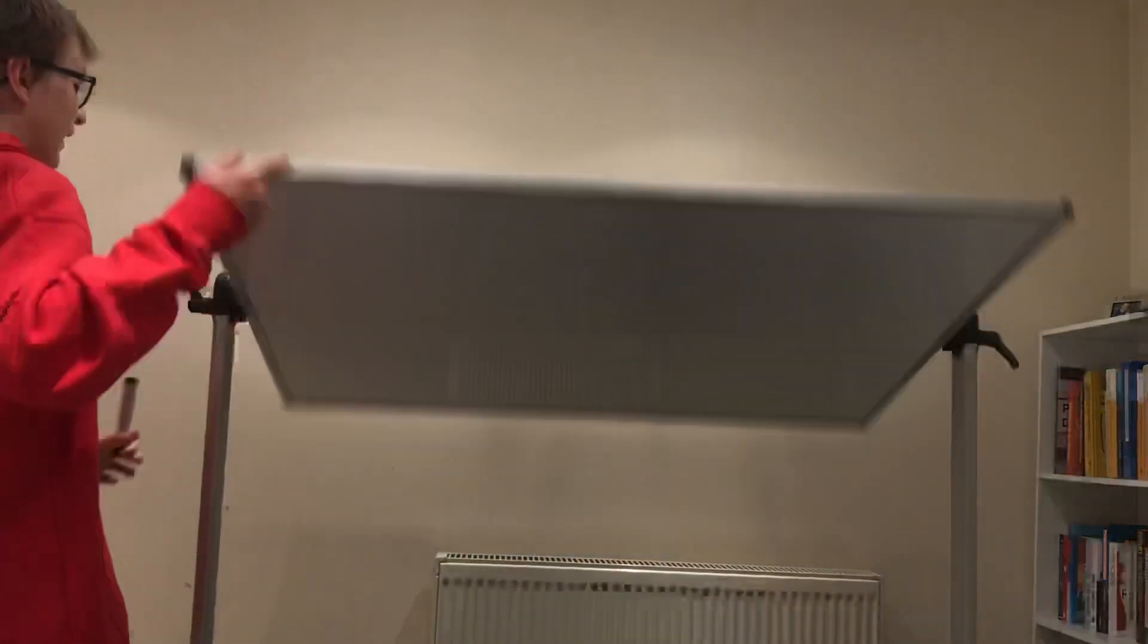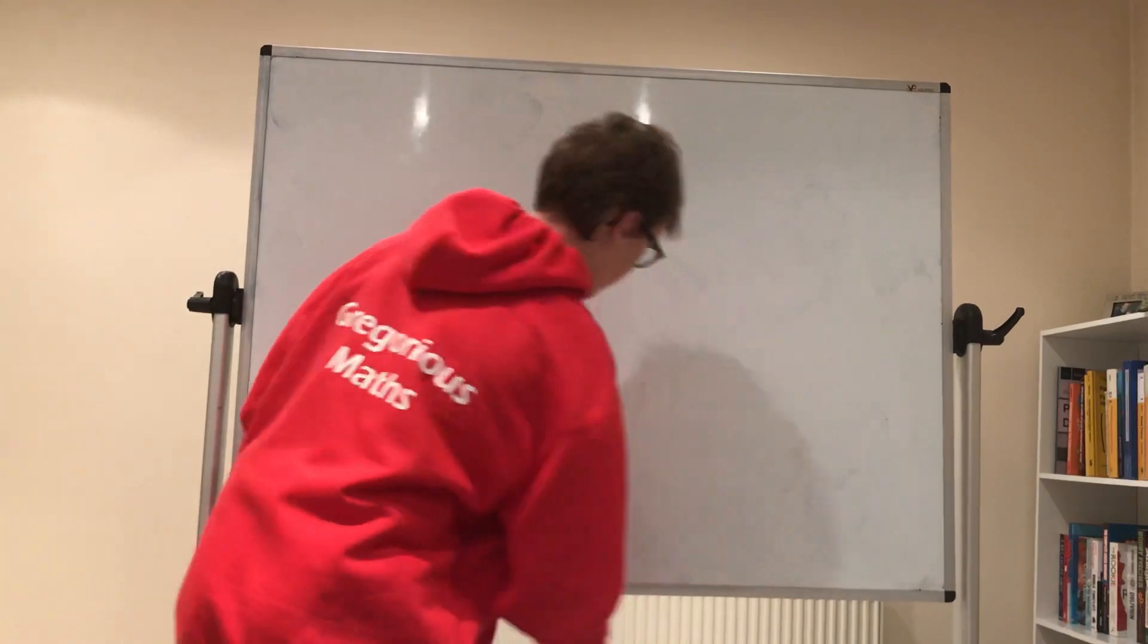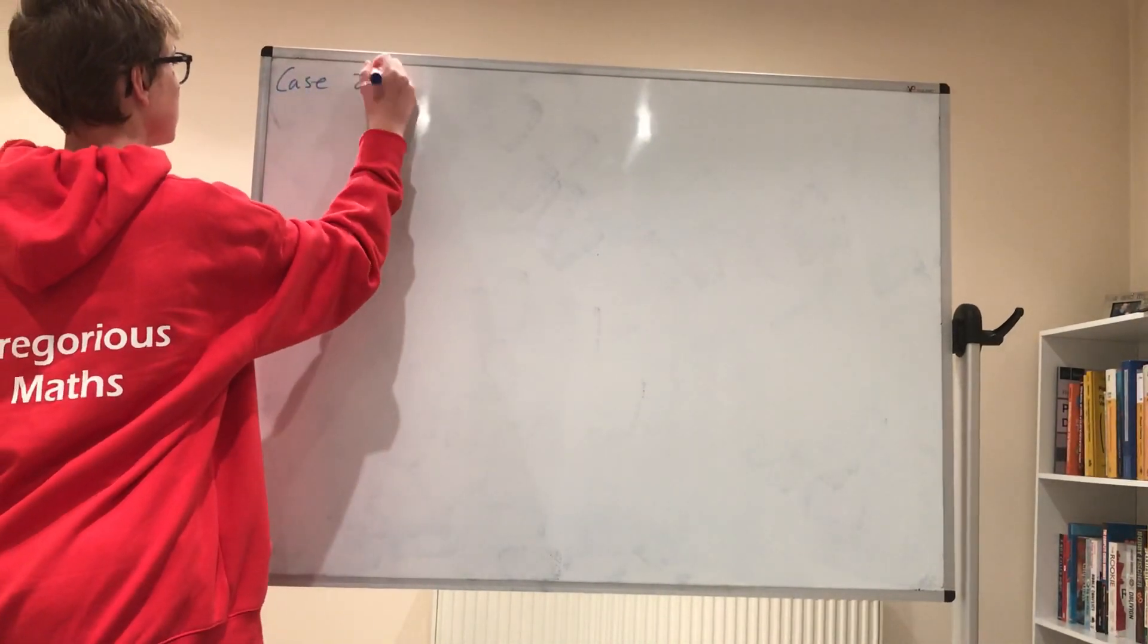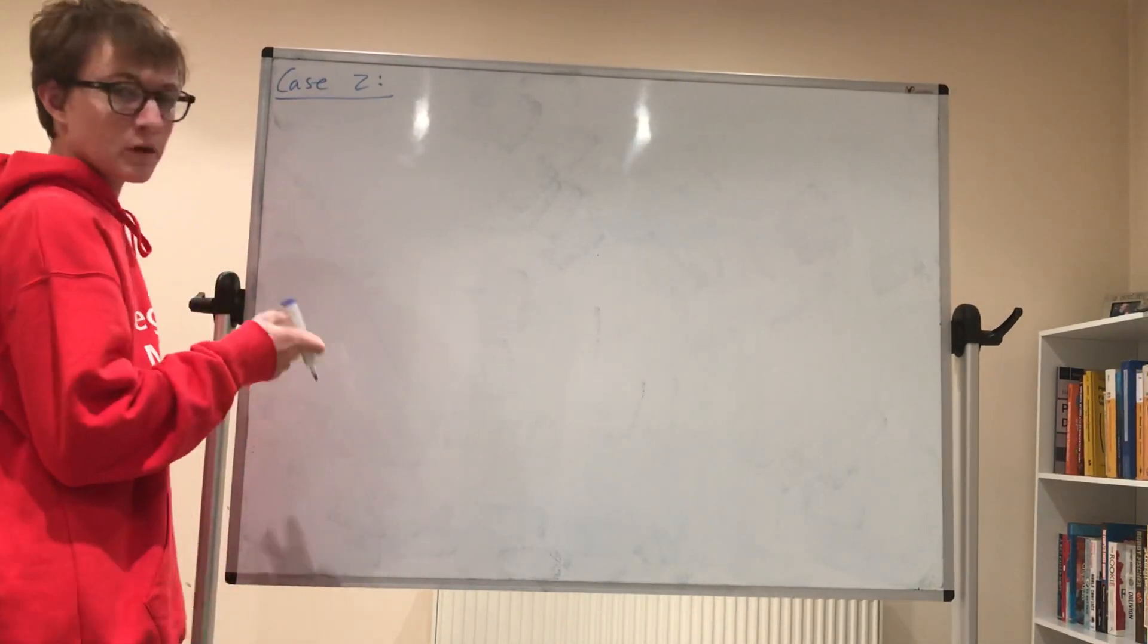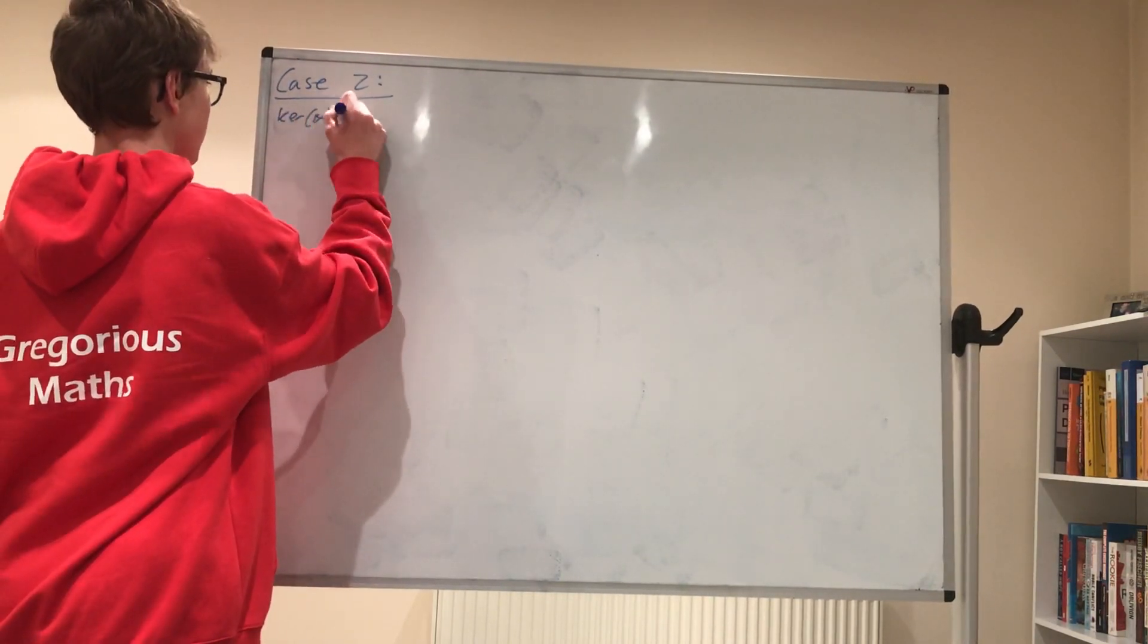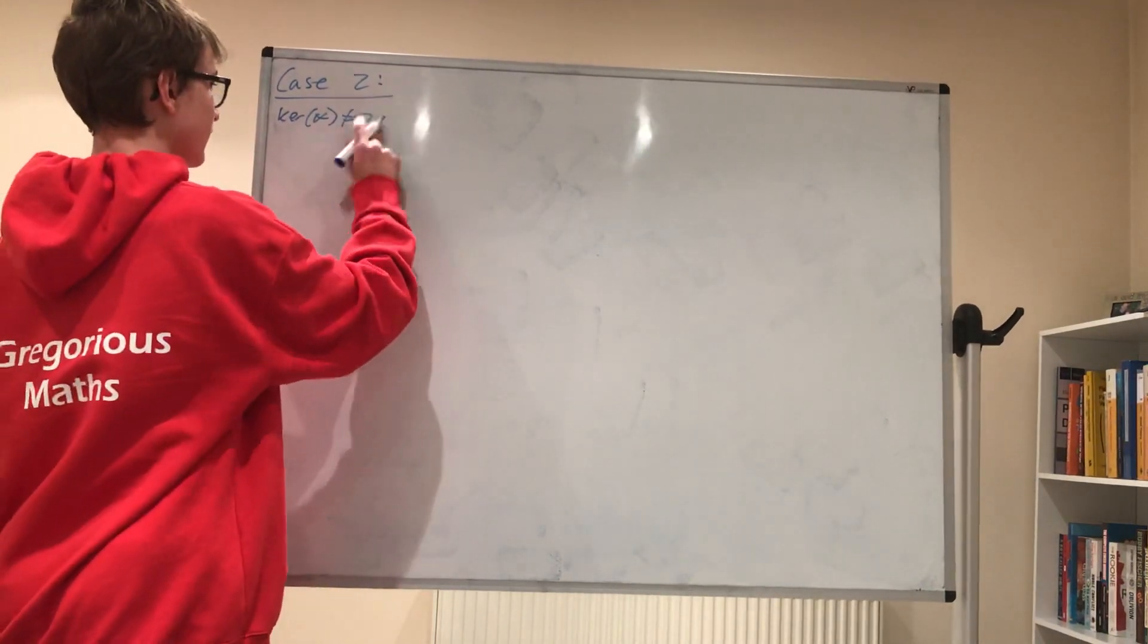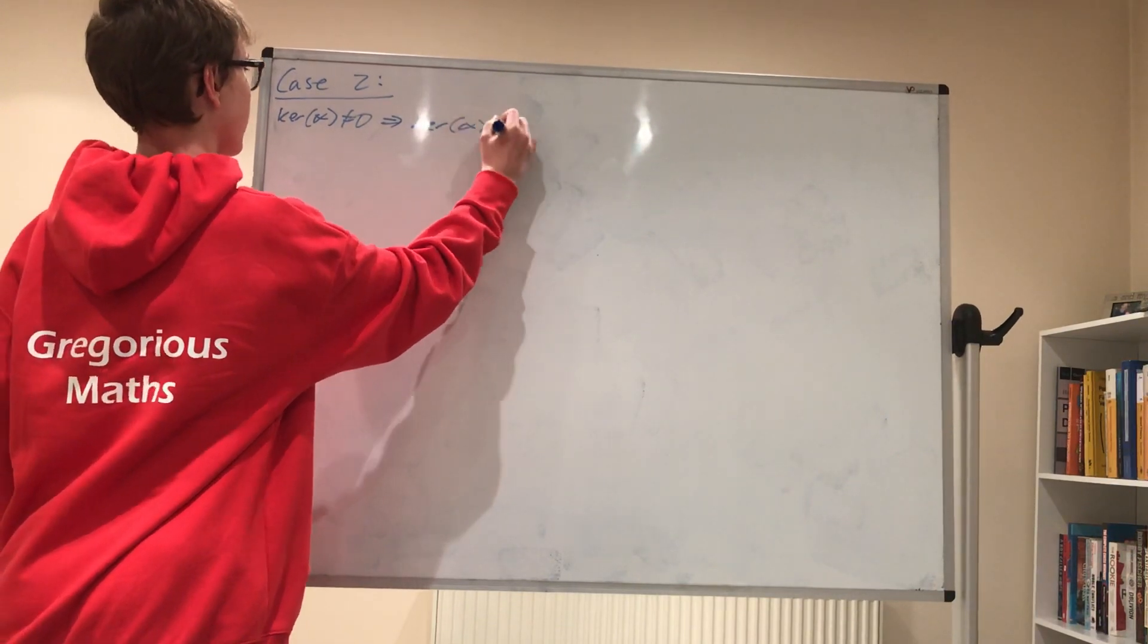So now let's look at the second case, case two basically, where the kernel of this map is not zero. And things get a little bit more interesting when this happens. So kernel of alpha is not equal to zero. So actually this implies that the kernel of alpha is a prime.